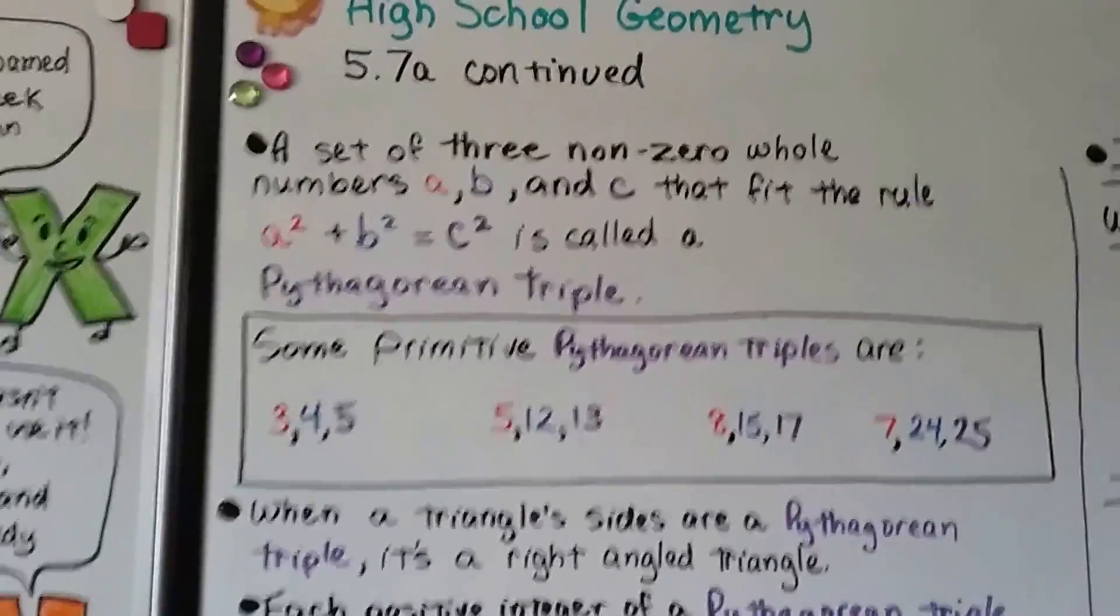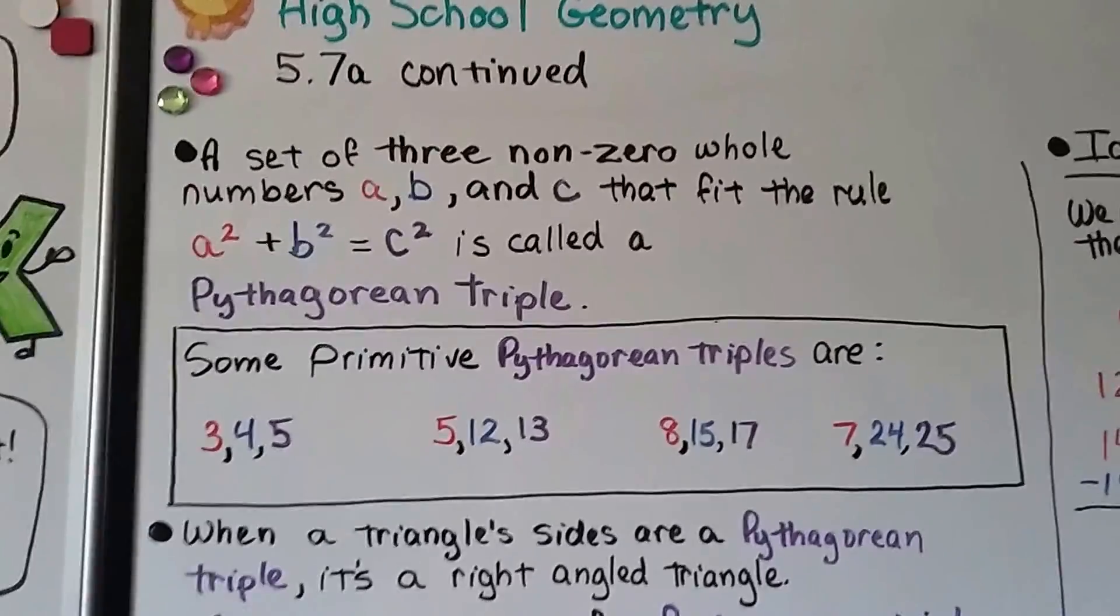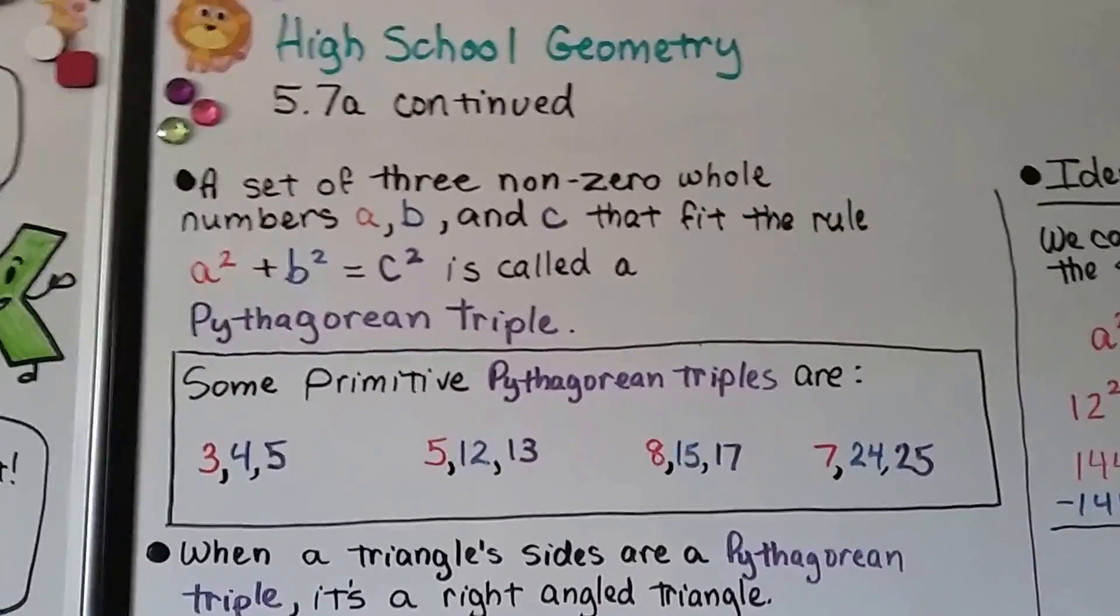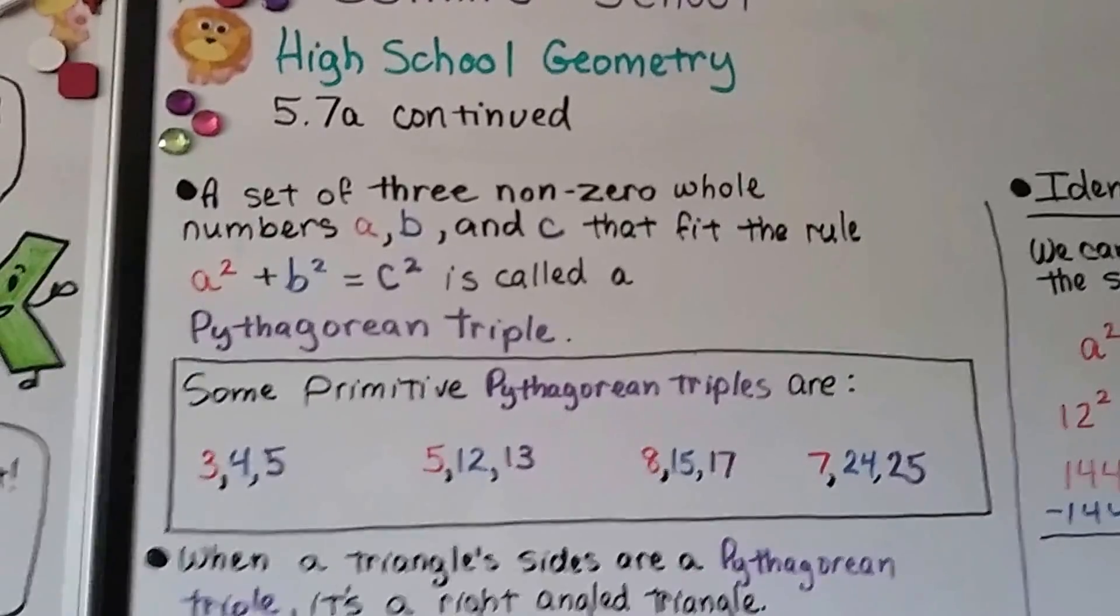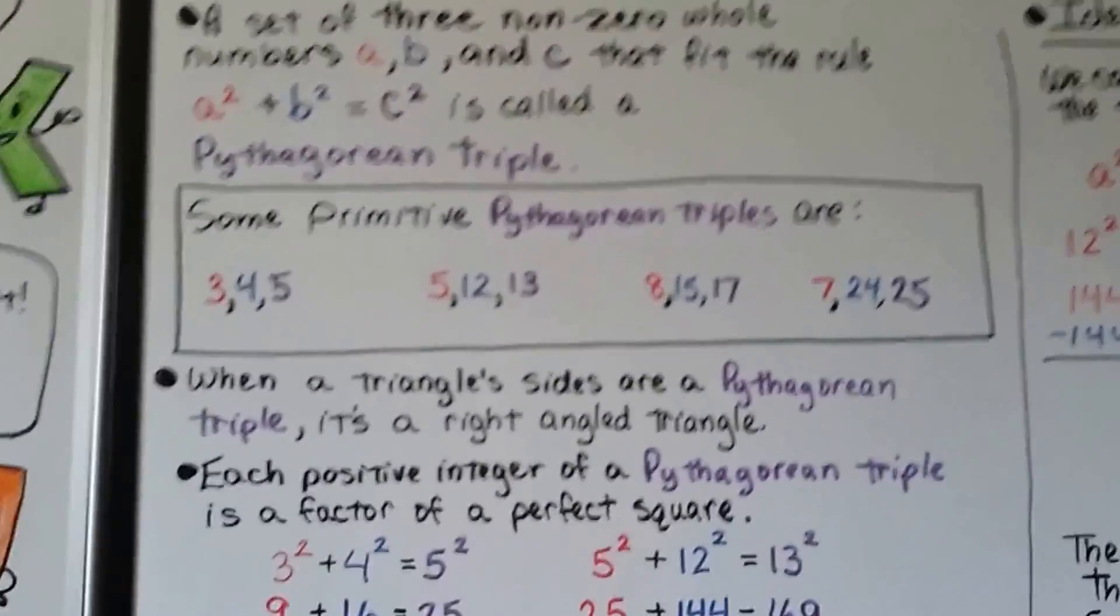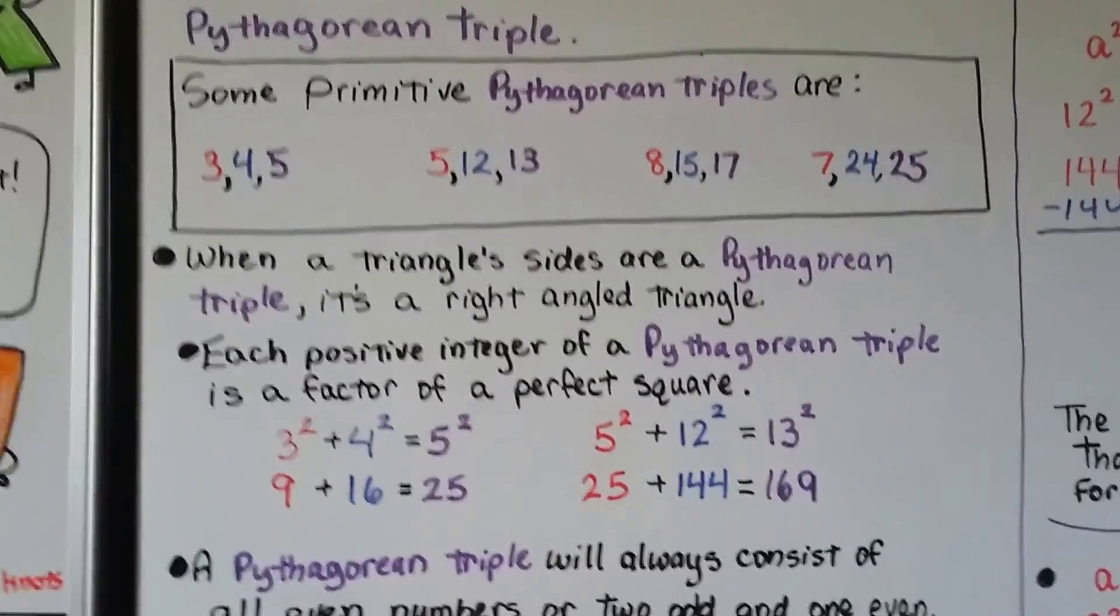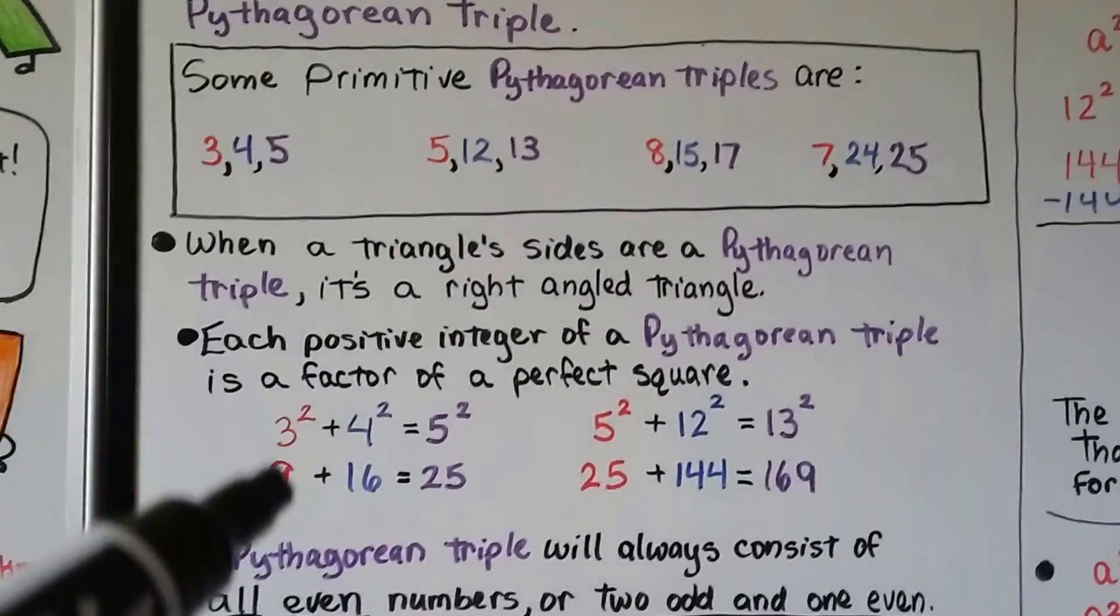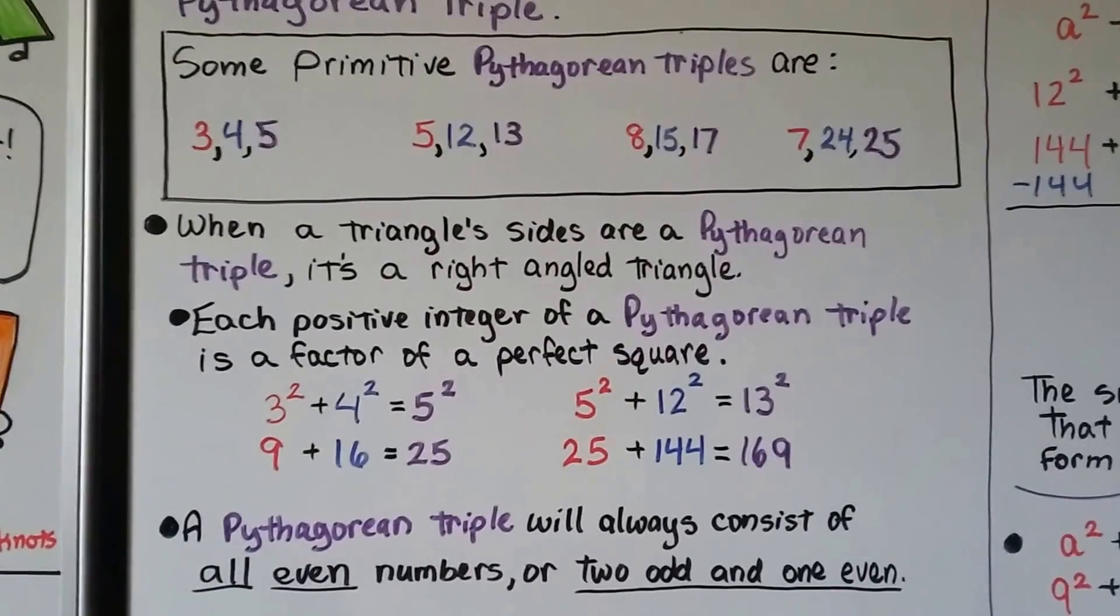A set of three non-zero whole numbers A, B, and C that fit the rule A squared plus B squared equals C squared is called the Pythagorean triple. And in this rectangle are some primitive Pythagorean triples. There's an infinite amount of primitive Pythagorean triples. So 3, 4, 5 is a real famous one. We did that at the beginning of the video. When a triangle sides are a Pythagorean triple, it's a right angled triangle. And each positive integer of a Pythagorean triple is a factor of a perfect square. So for the 3, 4, 5, we can do 3 squared, 4 squared, 5 squared. We get a 9 plus 16 equals 25. And that fits.